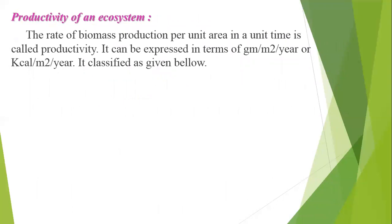Productivity of an ecosystem is defined as the rate of biomass production per unit area per unit time. It can be expressed in terms of gm per m² per year, or cal per m² per year.